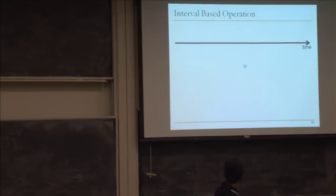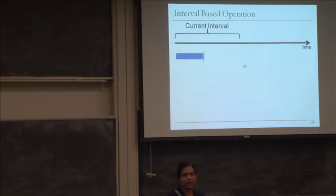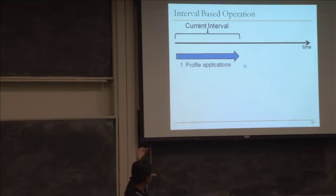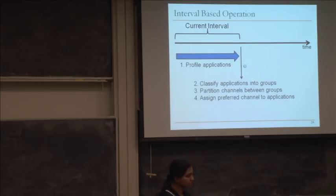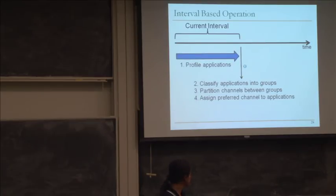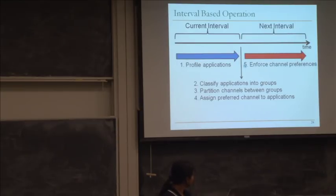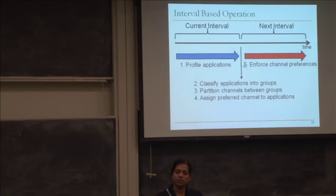MCP operates on an interval basis. During an interval, applications are profiled. At the end of an interval, this information is passed on to the operating system, which classifies applications into groups, partitions channels between these groups, and allocates a preferred channel to each application. In the next interval, these channel preferences are enforced — the operating system tries to allocate pages on the preferred channel.